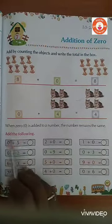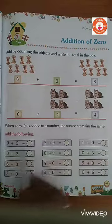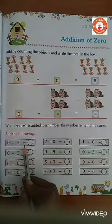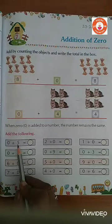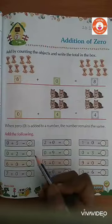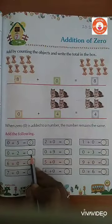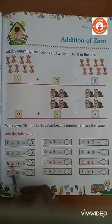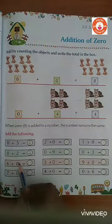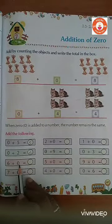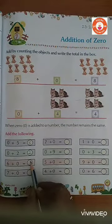Now, we have to add the following. 0 plus 5 equals 5. 0 plus 2 equals 2. 6 plus 0 equals - it remains the same number - 6 plus 0 equals 6.